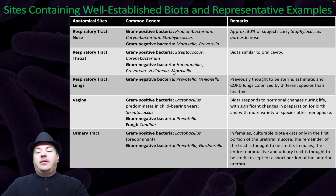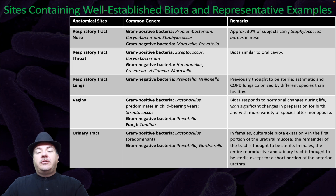The throat is gram-positive and gram-negative, with biota similar to the oral cavity. The lungs, previously thought to be sterile, contain gram-negative bacteria. In the vagina, we find gram-positive, gram-negative, and fungi; this biota responds to hormonal changes during life. In the urinary tract, we find gram-positive and gram-negative bacteria; in females, this biota is found only in the first portion — the remainder is thought to be sterile — while in males, the entire reproductive and urinary tract is thought to be sterile except for a very short portion at the anterior urethra.